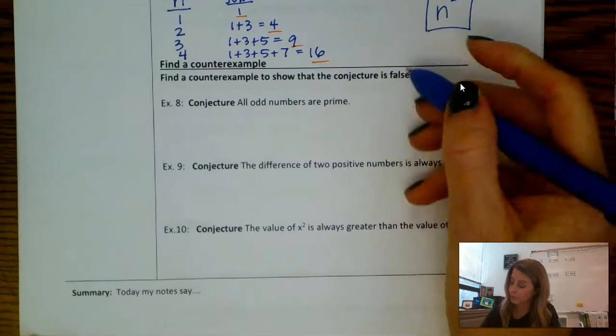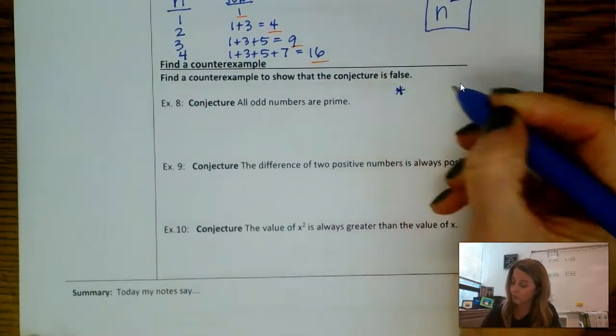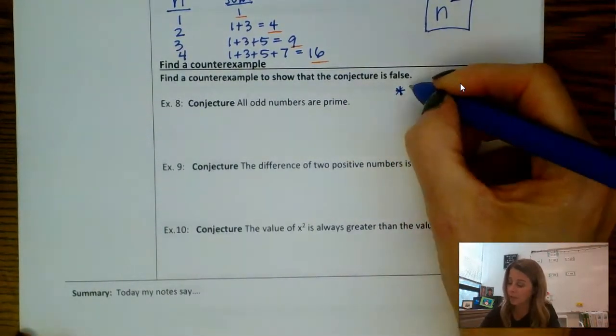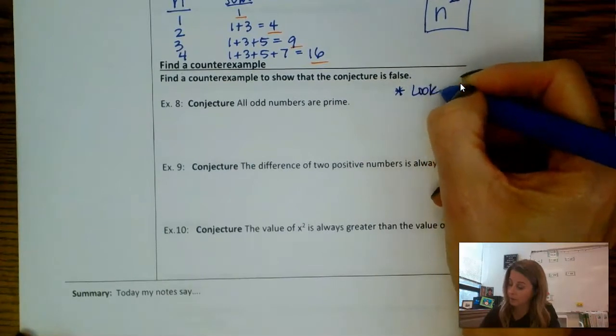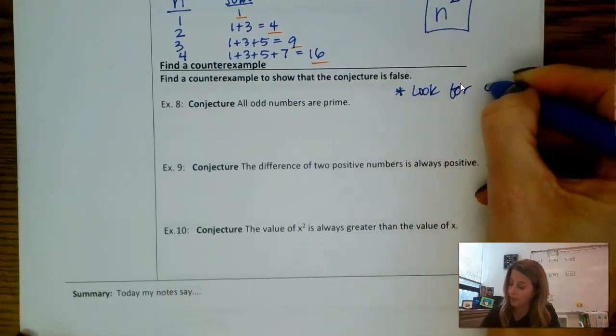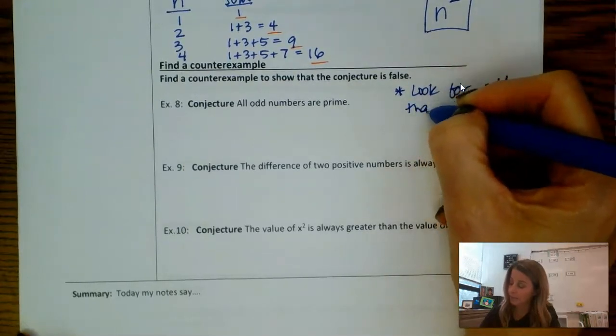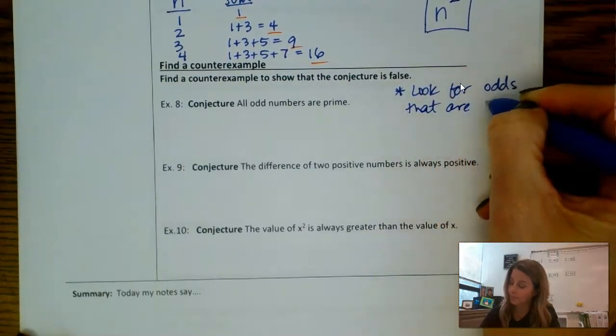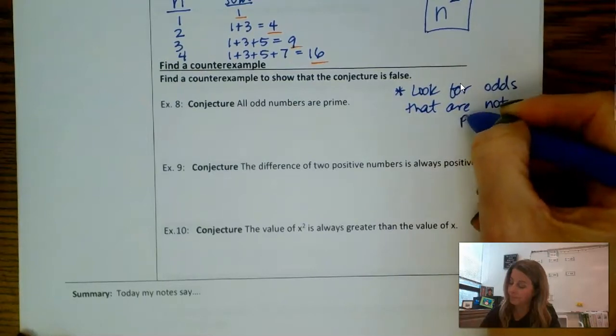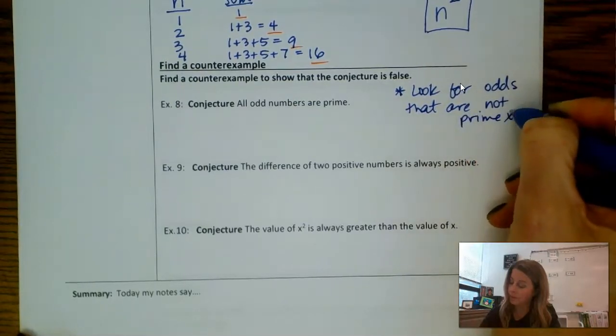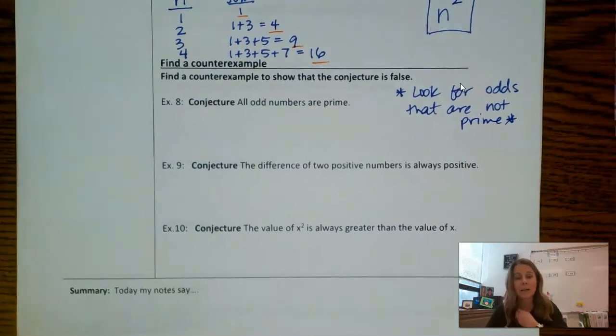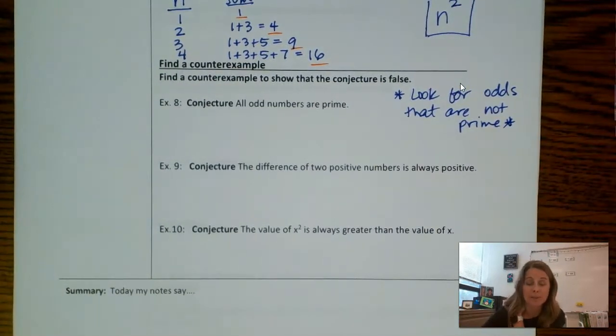For example, here's what you would be looking for. Look for odds that are not prime. So odd numbers that are not prime. So like 1, 3, 5, 7, 9—you're searching for odd numbers that are not prime.